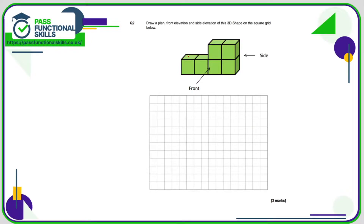The plan of this from above, we would see one, two, three, four — so that would just be four squares in a line. From the side, we would just see two, so there would be the side view. And from the front, we would see one, two, three, four on the bottom and two on the top, and the two on the top would be on the right-hand side.